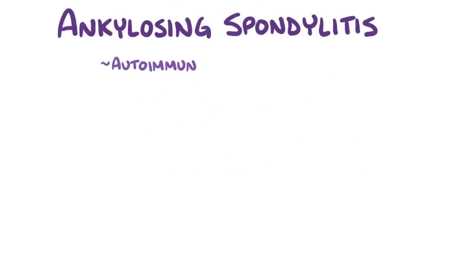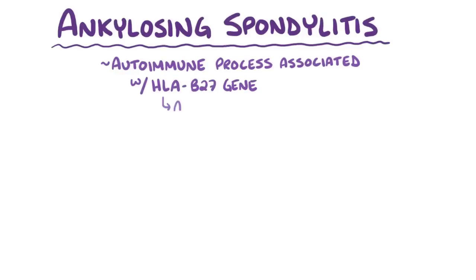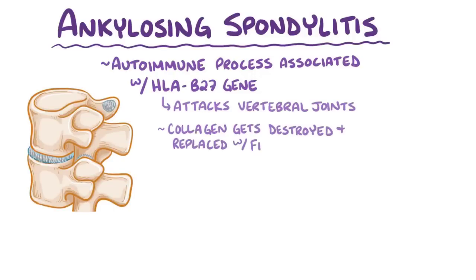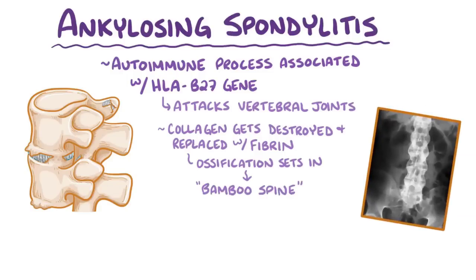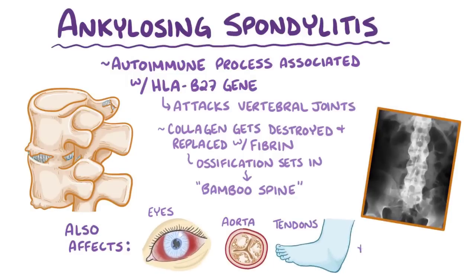As a quick recap, ankylosing spondylitis is an autoimmune process associated with the HLA-B27 gene, which attacks vertebral joints. In this process, collagen gets destroyed and replaced by fibrin, and ultimately ossification sets in, forming a bamboo spine on an x-ray or CT scan. It can also affect the eyes, aorta, tendons, and lungs.